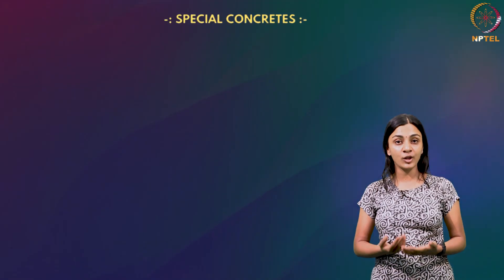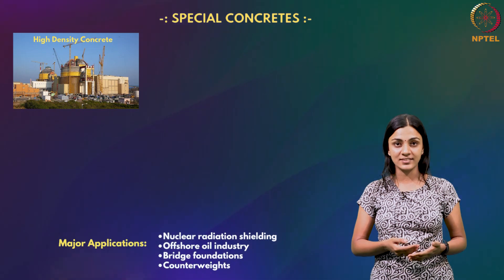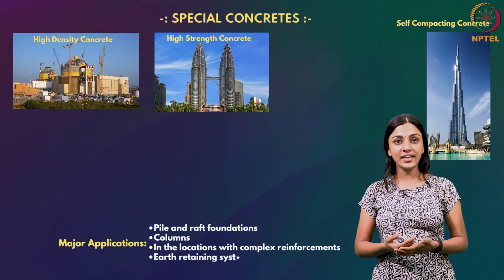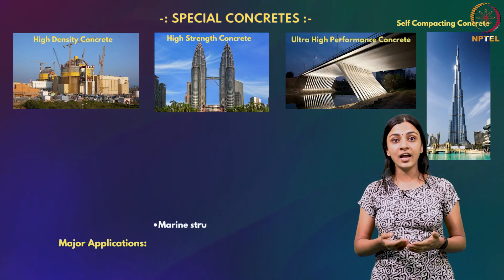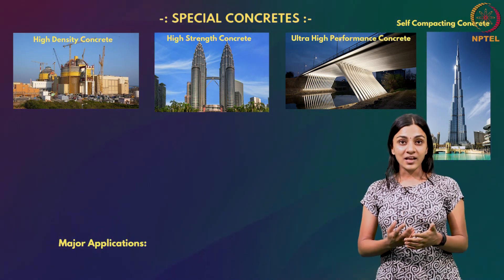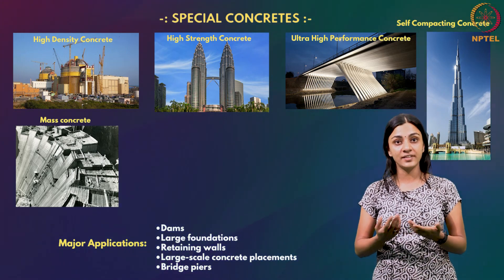It will be quite interesting to learn about the special concretes that made the construction of masterpieces worldwide possible, such as the Petronas Towers and the Burj Khalifa. High-density concrete is used in the construction of nuclear power plants by virtue of its radiation shielding capacity, while high-strength concrete is used in high-rise buildings. We will also learn about the need for self-compacting concrete in locations of high rebar concentration, and ultra-high-performance concrete for structures near marine areas due to their high resistance to environmental degradation. Mass concreting, involving large-volume placement such as in dams and large foundations, is yet another special concreting technique.